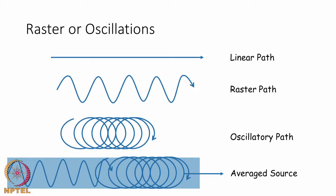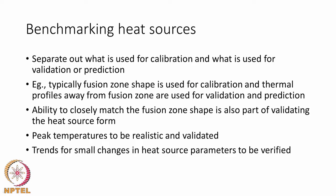There are situations where you want to capture that path information. One can average all these paths to have an average value, but the fact that there was a raster or oscillatory path with certain frequency and wavelength should be known so that information can be used to analyze effects caused by these changes in the heat source. These heat sources must always be benchmarked — we must know whether they have been calibrated, what information is used for calibration, and what information is used for validation.